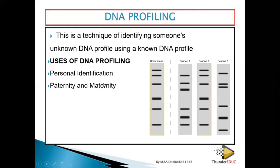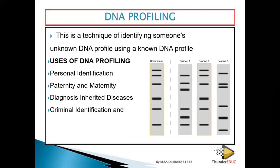For example, in a hospital where kids have been swapped at birth — when kids are just born they don't resemble their parents, but as they grow they do. By that time, we can still find the parents using DNA profiling. Another use is diagnosis of inherited diseases — some diseases can be diagnosed using DNA profiling, and sometimes you can't even find a cure for those diseases.